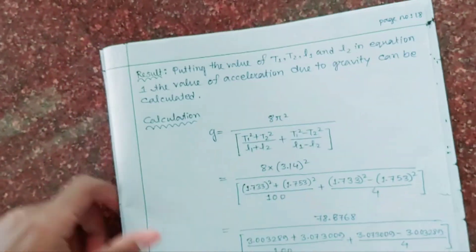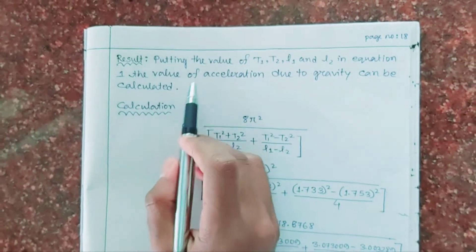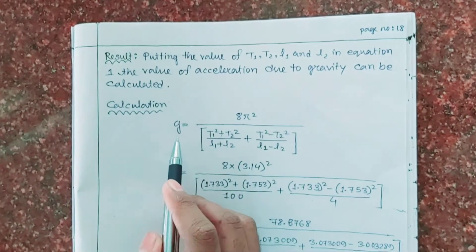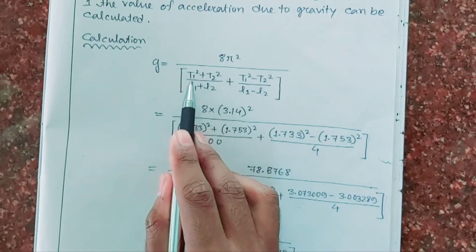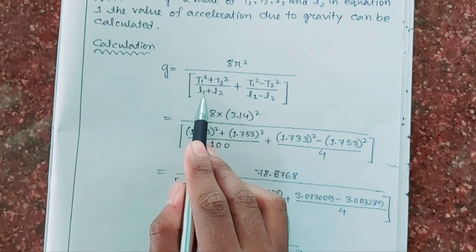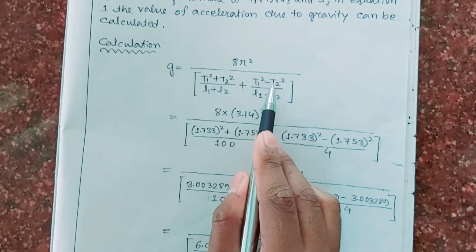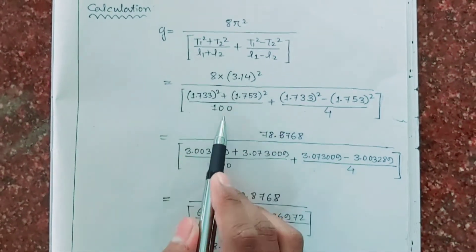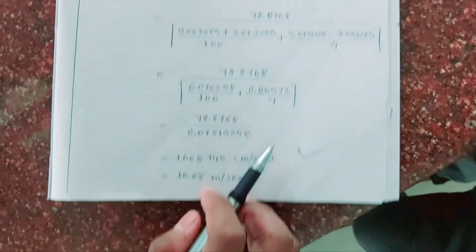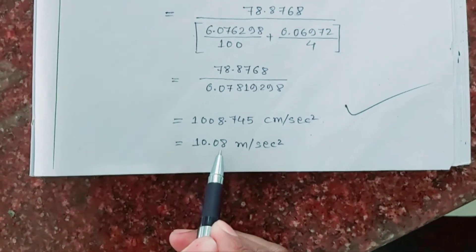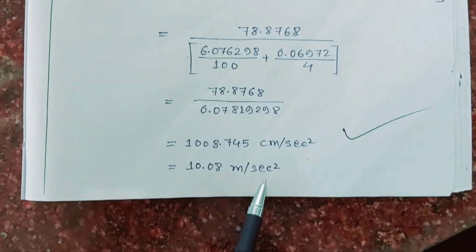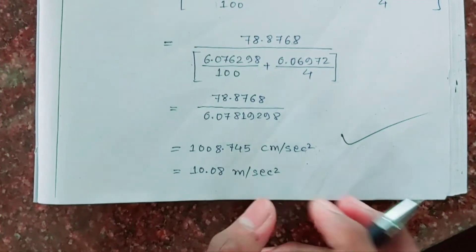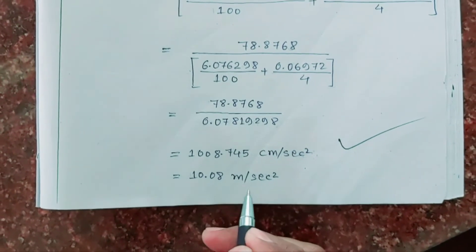Now we find the result by substituting all values of T1, T2, L1, and L2 into equation 1: g = 8π² × [(T1² + T2²)/(L1 + L2) + (T1² − T2²)/(L1 − L2)]. After solving, we get g = 10.08 m/s², which is not exactly equal to 9.8 m/s², but is approximately the same as 9.8 m/s².